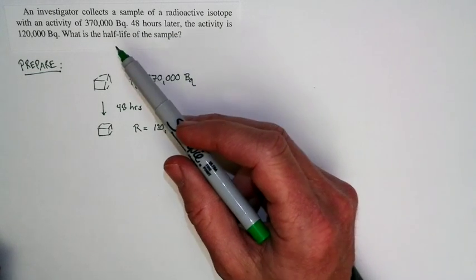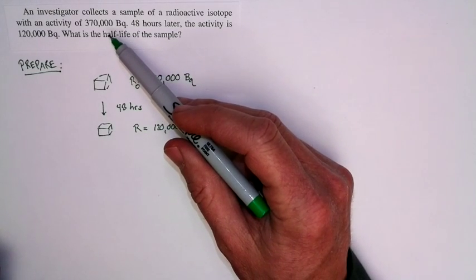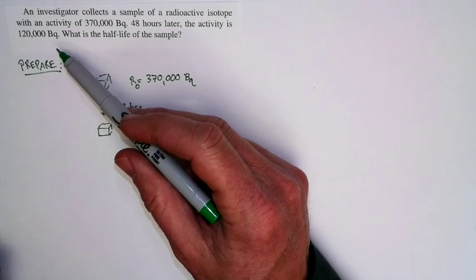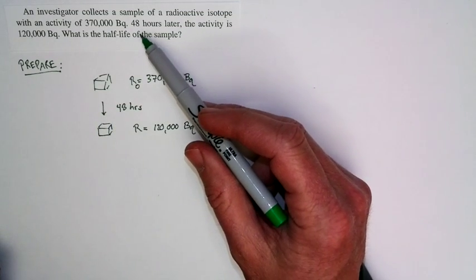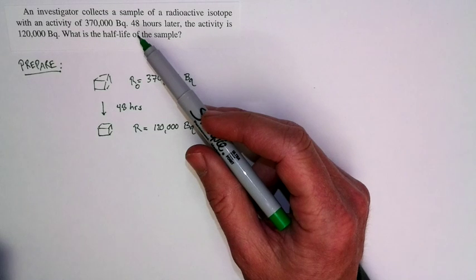because after two half-lives, it would be down to something close to 90,000 Becquerels, and it isn't down that far. So I'm expecting this to be a little bit less than two half-lives,